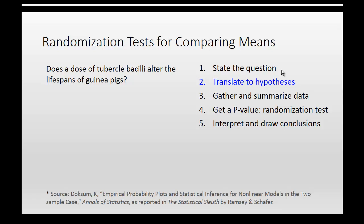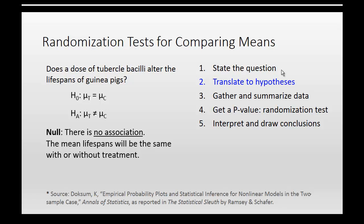We've got to translate our question about whether bacilli will affect guinea pig lifespans into null and alternative hypotheses. These hypotheses use the symbol mu because we're comparing means. The null hypothesis is that the means for the populations are equal — it's the hypothesis that says the bacilli treatment makes no difference whatsoever. The alternative hypothesis says no, in some way these averages change. In words, the null hypothesis says there is no association between treatment and outcome.